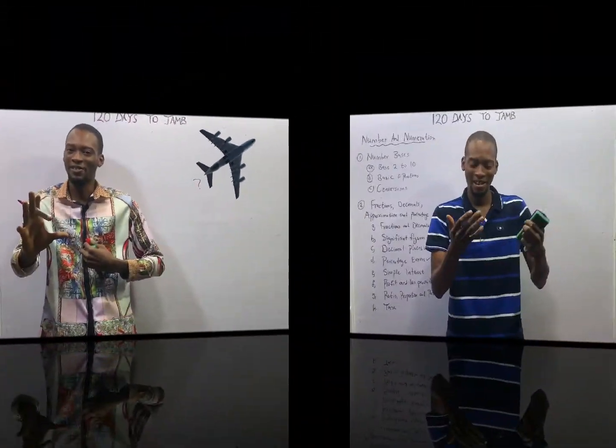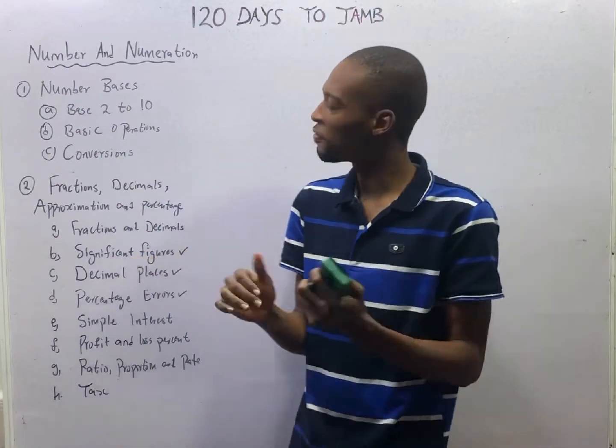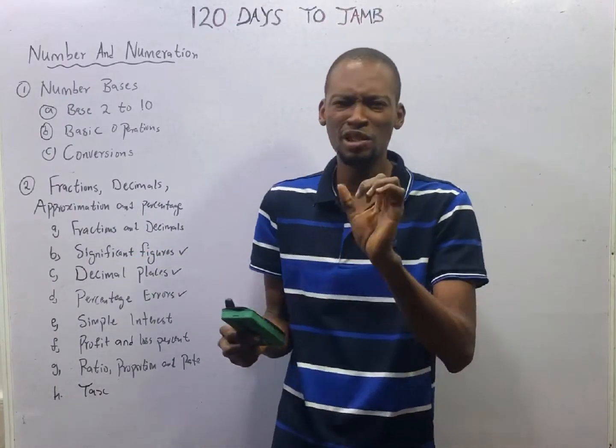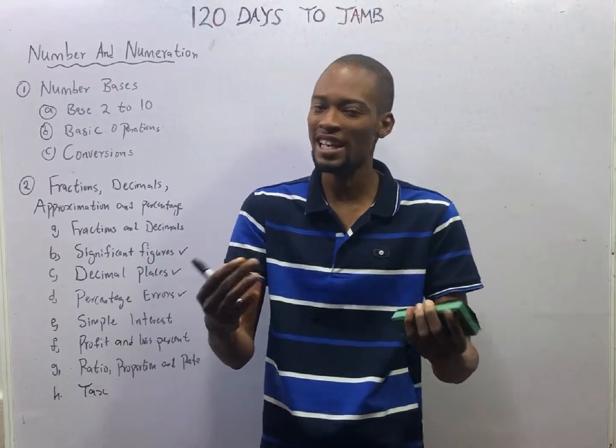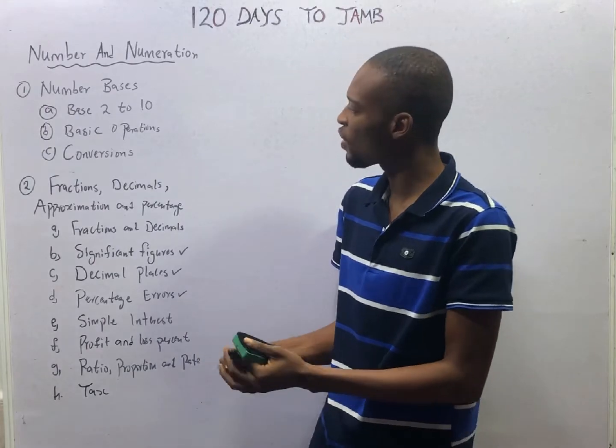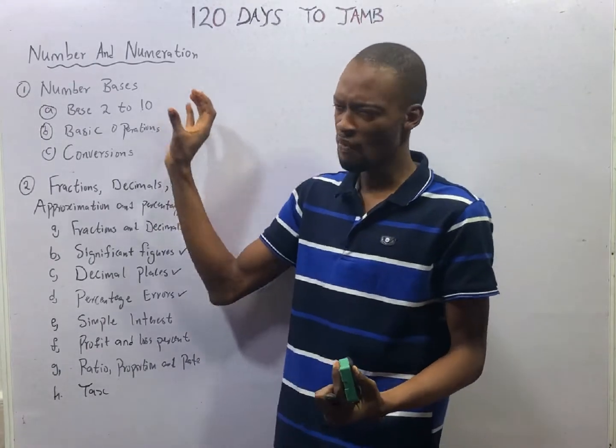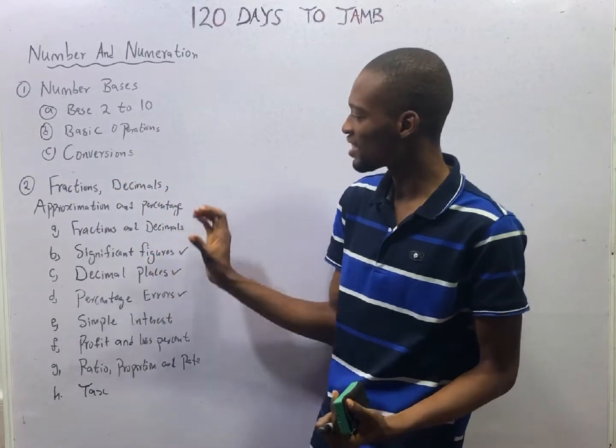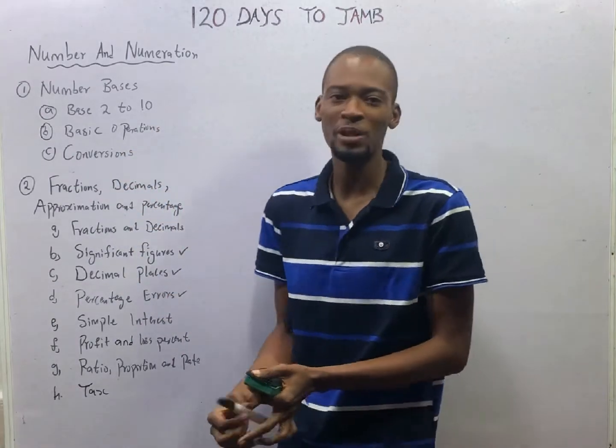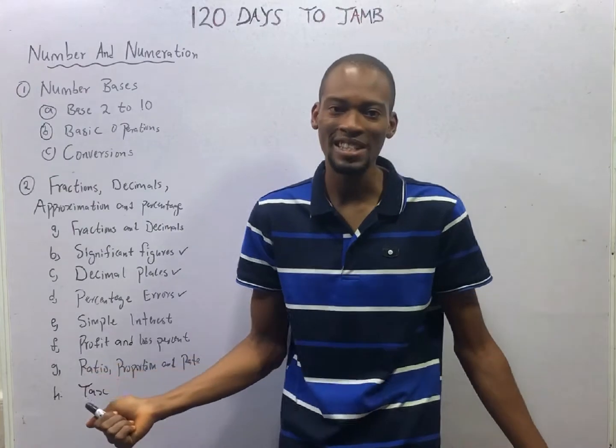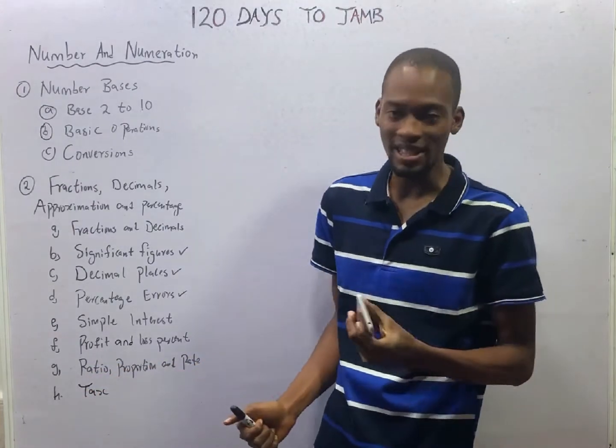Ladies and gentlemen, it is time to take off episode 6 of the 120 Days to JAMB Mathematics with Flash Isaac. We are still solving questions under Number and Numeration, Number Bases, Fractions, Decimals, Approximation, and Percentage.